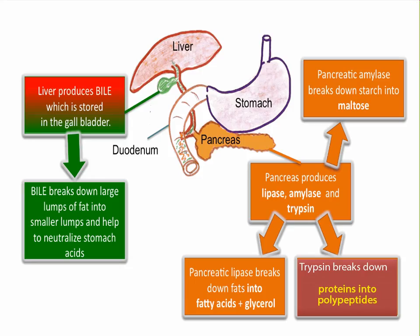As not all of the starch will have been chemically digested in the mouth, some will get through to the small intestine. As a result, a second enzyme called pancreatic amylase is secreted from the pancreas into the small intestine to digest the remaining starch to maltose.